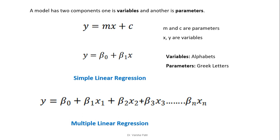The equation y equal to mx plus c, where m and c are parameters and x and y are variables. Instead of using this equation, we use y equal to beta0 plus beta1 times x, where variables are represented by alphabets while parameters are represented by Greek letters. This is the example of simple linear regression as only one independent variable is involved. For multiple independent variables, we call that multiple linear regression, where n independent variables from x1 to xn are involved.